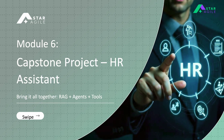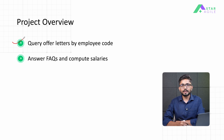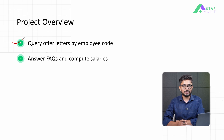In this session, we are going to create a simple capstone project that will allow us to combine all the previously learned topics together. Here, we are going to use the concept of RAG, Agents and Tools to create an HR assistant that can answer questions for each and every employee of an organization. The goal is to essentially query different offer letters of each and every employee of a company.